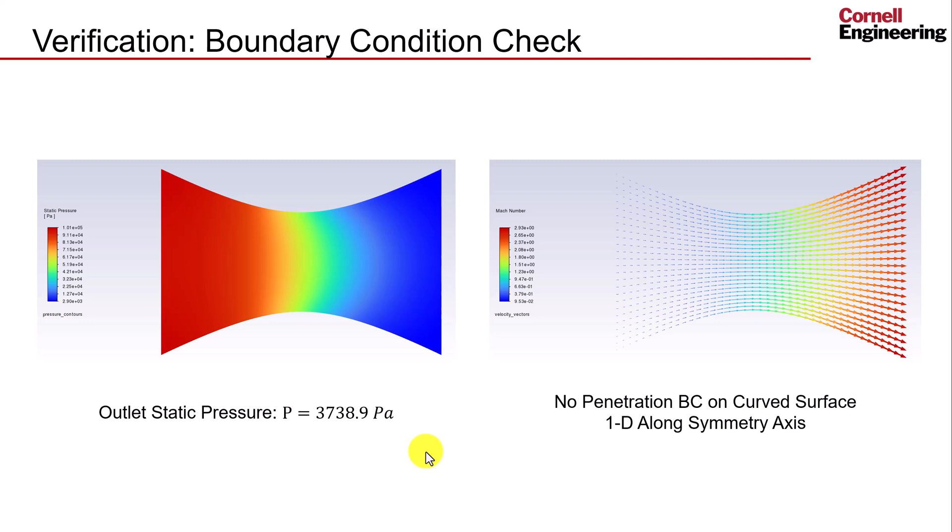While it is difficult to directly verify that the wall and axis boundary conditions were satisfied, the velocity vectors provide reasonable certainty that the velocity at the curved edge does not penetrate the boundary, and that the velocity is one-dimensional near the symmetry axis.